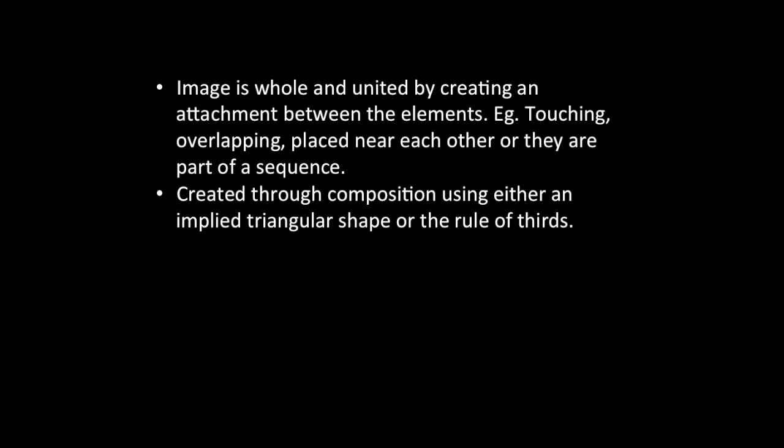We'll start with unity. The idea of unity is that the image is whole and united, by creating an attachment between the elements. One of your elements might be shape, and we have that unity when they're either touching or overlapping, placed near each other, or part of a sequence. This could be shape, colour, line, or any of those elements we've already looked at. It's usually created through composition — using either an implied triangular shape or the rule of thirds.